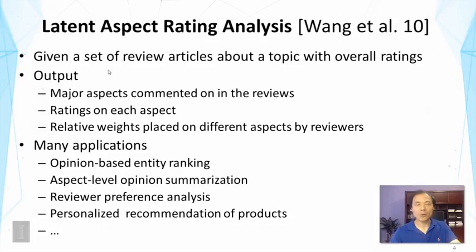This problem is called Latent Aspect Rating Analysis. Given a set of review articles about a topic with overall ratings, we hope to generate three things: one is the major aspects commented on in the reviews; the second is the ratings on each aspect, such as value, room, or service; and third is the relative weights placed on different aspects by the reviewers. This task has a lot of applications — we can do opinion-based entity ranking, generate aspect-level opinion summaries, analyze reviewers' preferences, compare their preferences on different hotels, and do personalized recommendations of products.